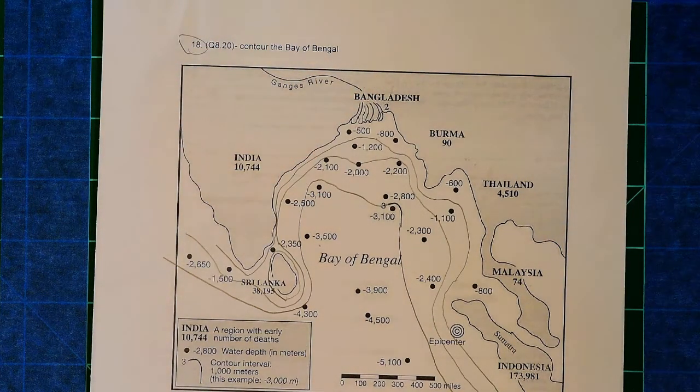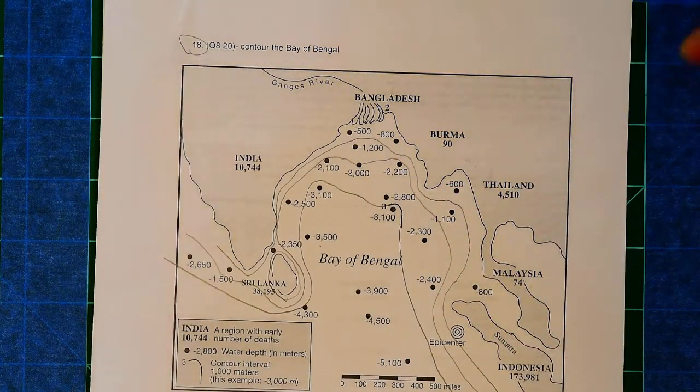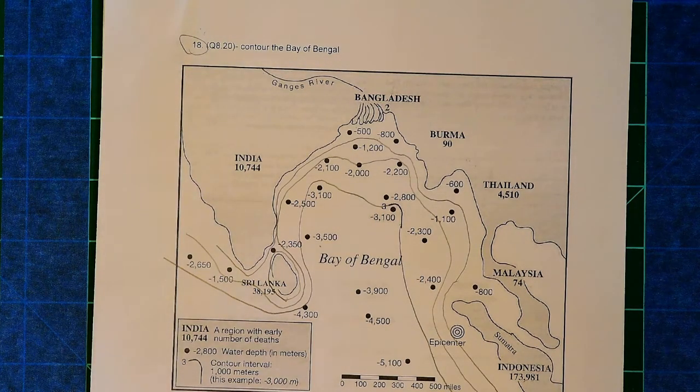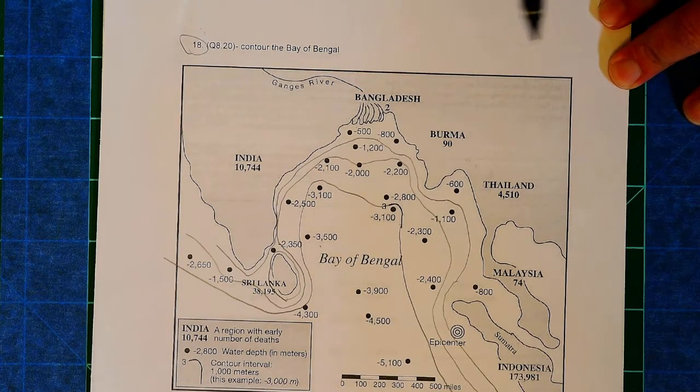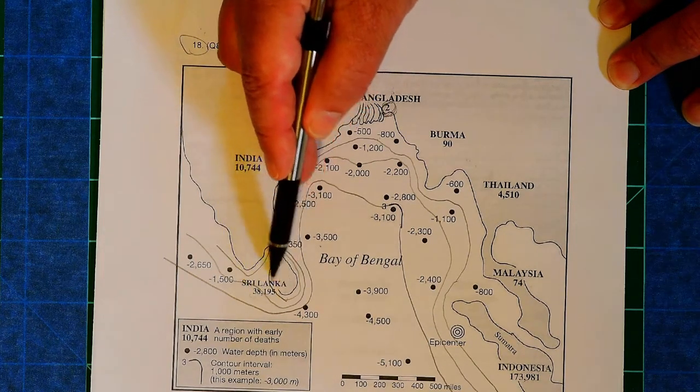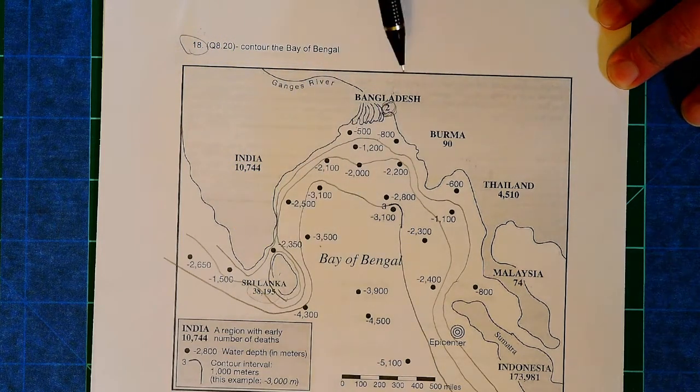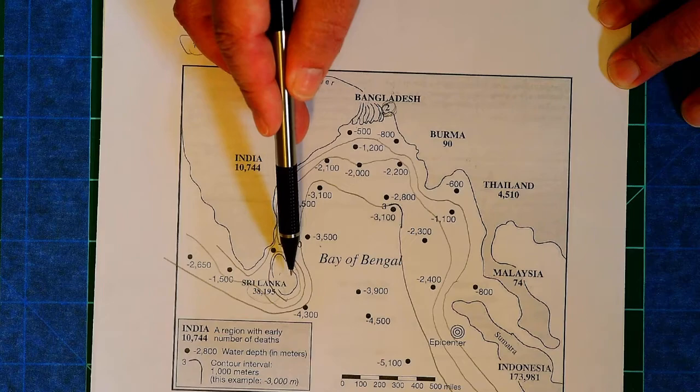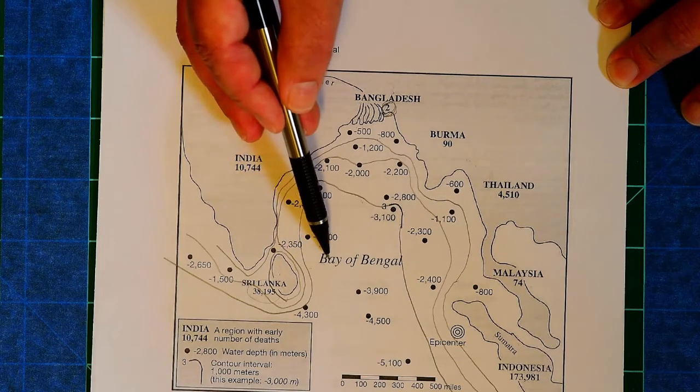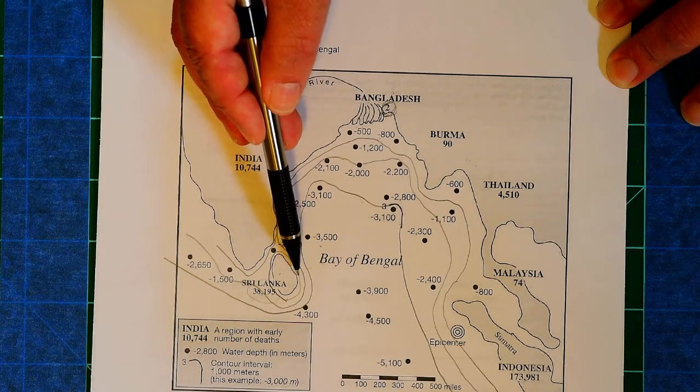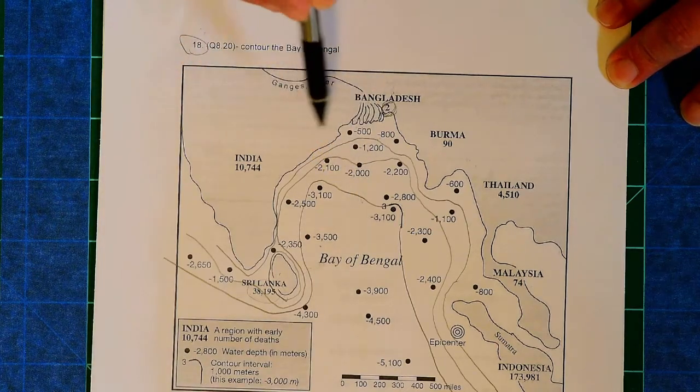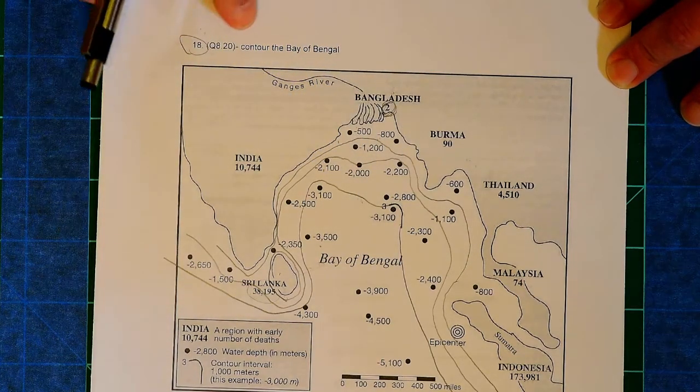And one thing I want you to pay careful attention to, the reason you did this in number 18 is number 19. It's going to ask you why, when there was a tsunami, only 2 people died in Bangladesh, but 38,000 died in Sri Lanka. And so pay attention to the water depth as we leave Bangladesh versus the water depth as we leave Sri Lanka. Right? It gets from shallow to deep very rapidly here. But there's a lot of shallow water here. Pay careful attention to that as you answer number 19.